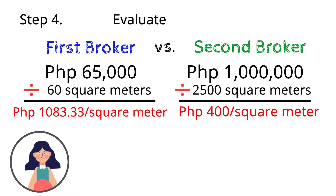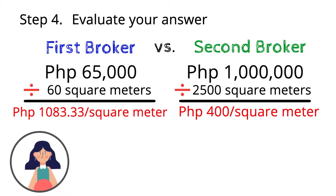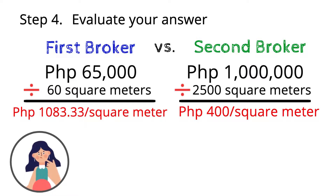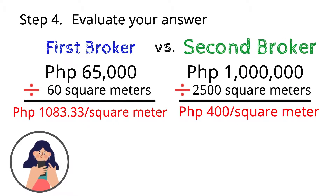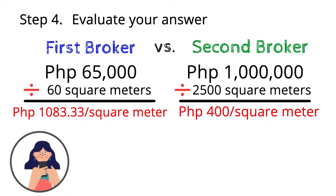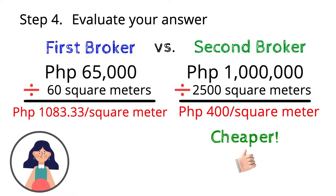1,000,000 pesos is quite a big amount, and so the lot of the first broker seems cheap. But if you compute the lot of the second broker, you'll find out that his lot is cheaper.